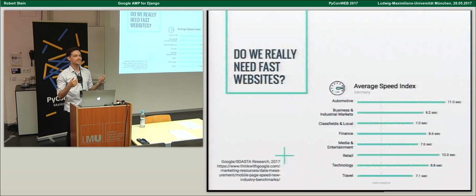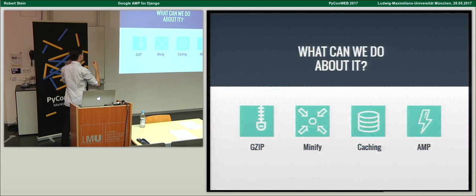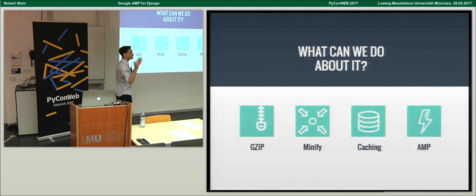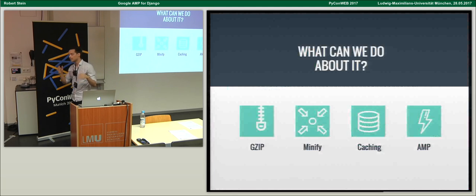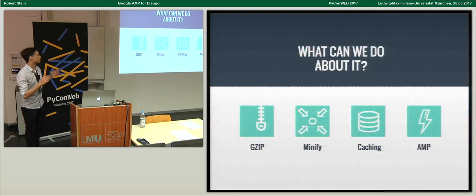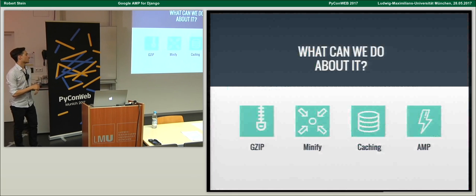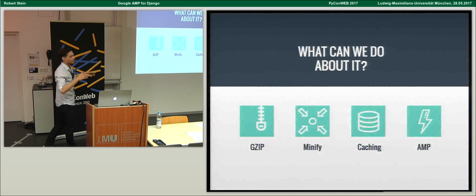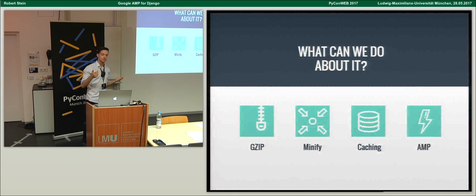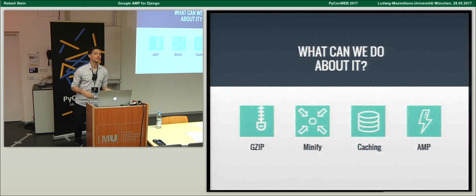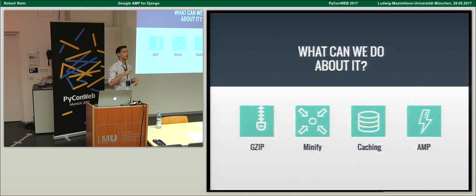There are ways to make your website fast that we all know — you can use gzip, minify your scripts and stylesheets, compress them, use caching like Varnish or whatever. There are other ways to speed up your page, and you can use AMP. How many of you have heard of the AMP project before? Quite a few — that's cool.